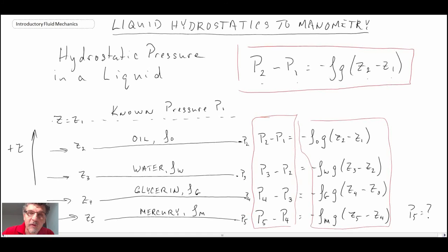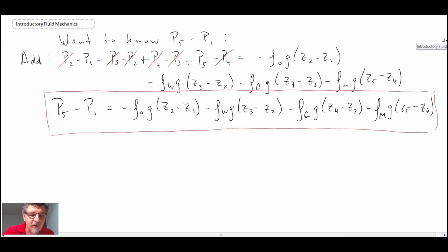In a manometer, what you're doing is you're measuring the fluid interface. And from that, knowing the density of the fluid, you can use the hydrostatic pressure distribution equation in order to determine what the pressure is at different locations within your system.